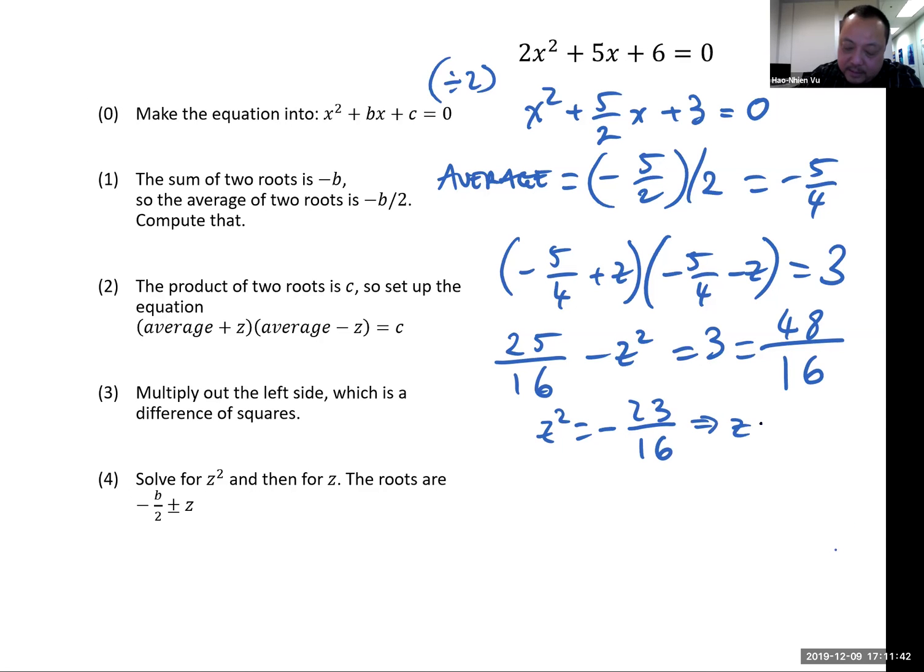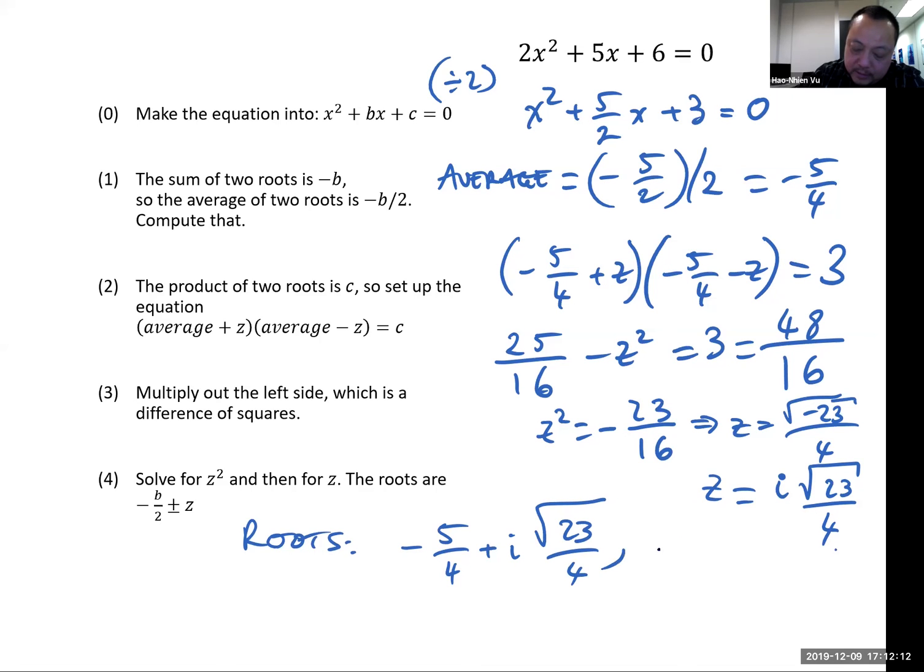So that means z is square root of negative 23 over 4, which you can write in terms of i as i radical 23 over 4. So the roots are negative 5 fourths plus i times radical 23 over 4 is one and the other is negative 5 fourths minus i radical 23 over 4.